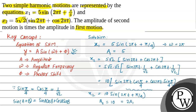Therefore, finally we can write that a2 is 2 times a1. This is the final answer of the given question. I hope you understood the solution. Thank you.